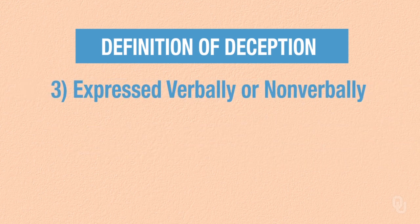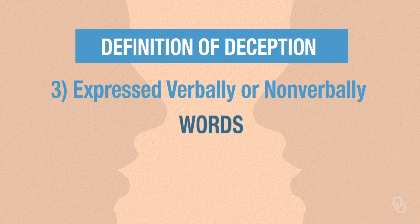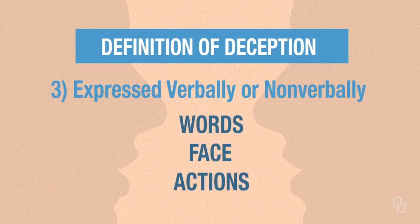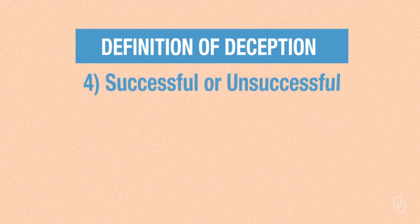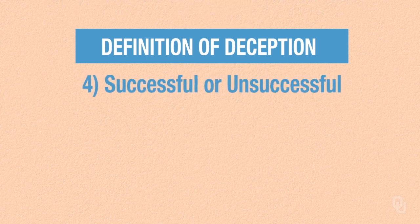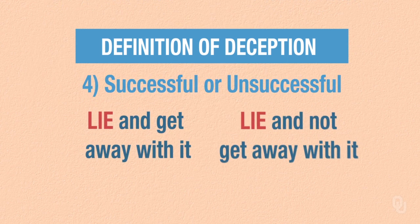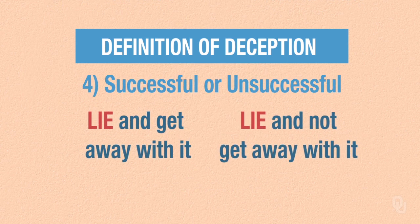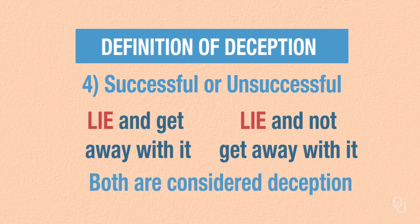Third, it can be expressed verbally or non-verbally. You can lie with your words, or you can lie with your face or your actions. Fourth, it can be successful or unsuccessful. In other words, you can lie and get away with it, or you can lie and not get away with it, and we would consider both of those deception.